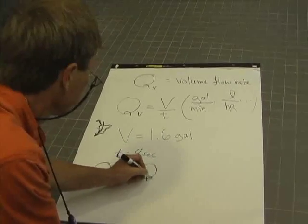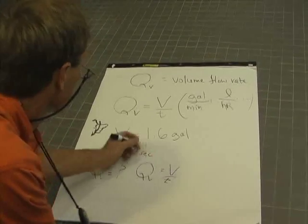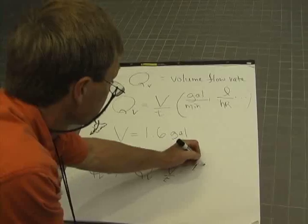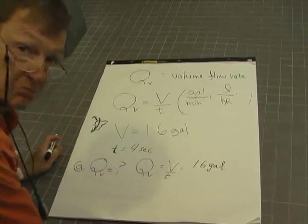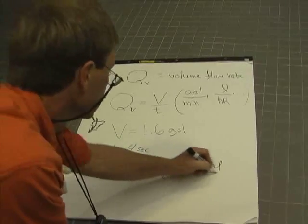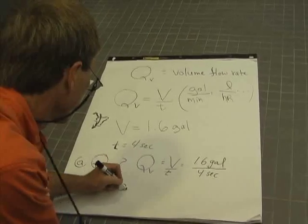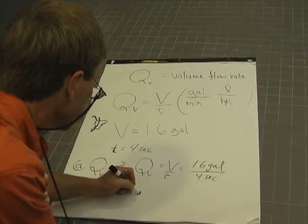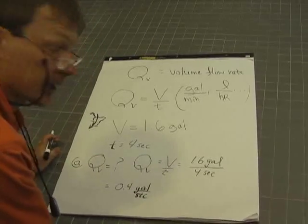Volume flow rate is the volume over time, which is 1.6 gallons. Well, actually, let's call this A. I'll do a couple of calculations. Divided by the time, which is 4 seconds. And that's going to be equal to 0.4 gallons per second.